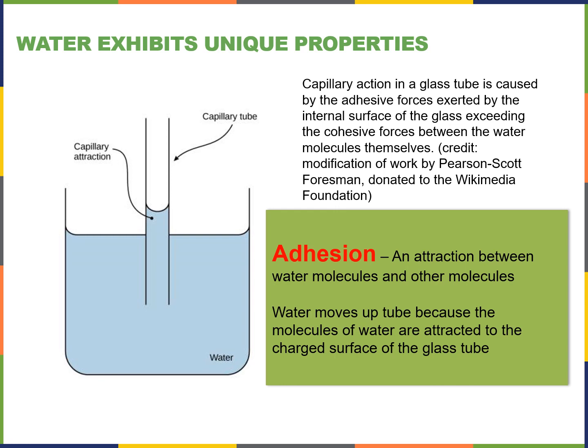Not only at the surface, but within the body of water as well — since the water molecules are all interacting, a water molecule up here is hydrogen bonded through a series of events to a water molecule down at the bottom. This is called adhesion: where one water molecule goes, they all go. It allows for things like the capillary action you see here. When you use a straw and suck up a soda, you're creating a vacuum; the vacuum pulls the water at the surface, and because of adhesion all the other water molecules below also go up the straw.